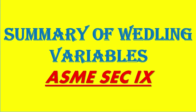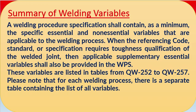Here we'll give the explanation of the welding variables. A welding procedure specification (WPS) shall contain, at the minimum, the specific essential and non-essential variables that are applicable to the welding process. This is very important for any WPS — essential and non-essential variables need to be elaborated.